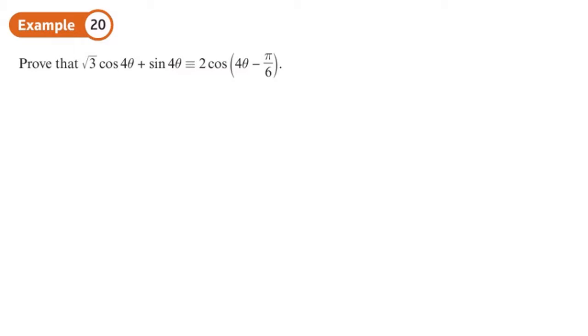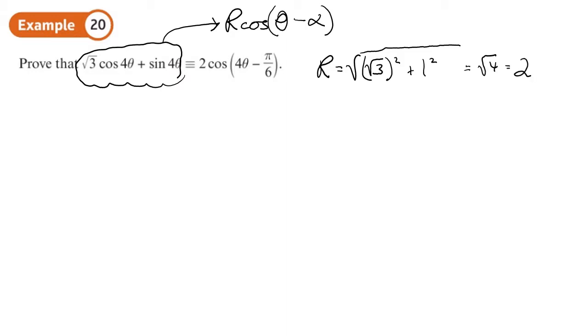Okay, so we've got another one here. Prove that what we have on the left is what we've got on the right. Now, this is the method from the previous section. I think what we're going to do, we're going to write this in the form r cos theta minus alpha. That matches up, doesn't it? So we're going to find r and alpha. So r is just going to be the square root of root 3 squared plus 1 squared. So that's root 4, which is 2. And then alpha is going to be the tan inverse of either root 3 over 1 or 1 over root 3.